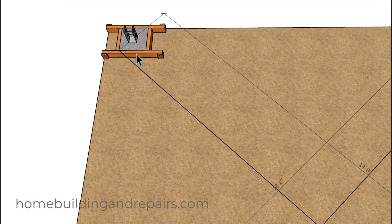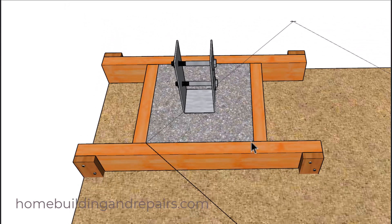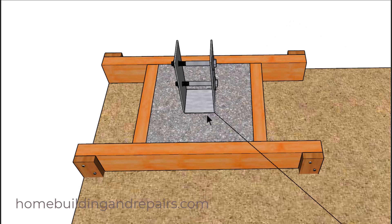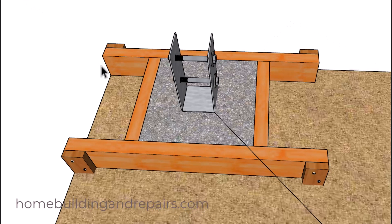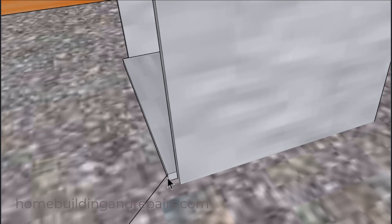So again, instead of going from this point over here I'm going from this point. If I'm going to be using post base connectors, I might choose to use the corner of the post base connector instead of the corner of the form boards.